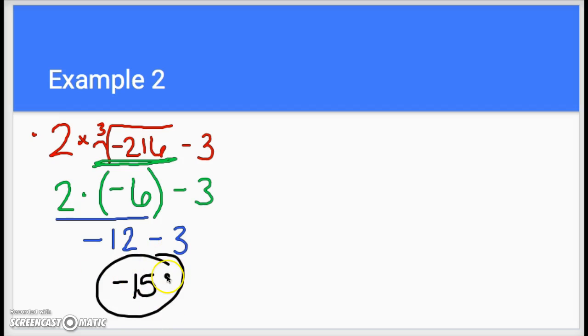Two times negative six would be negative twelve, still have the minus three, and we end up getting negative 15 as our answer. Whenever you're doing these, just make sure the cube root, square root, and all of that kind of serves as part of the parentheses. You want to take care of that and the exponents, take care of all that before you do your multiplication, division, addition, subtraction, and all of that.